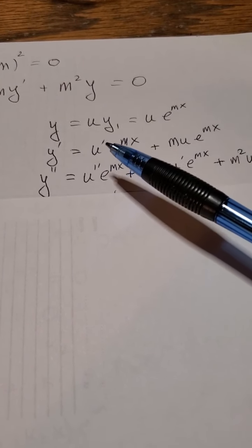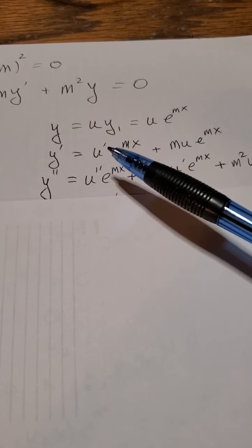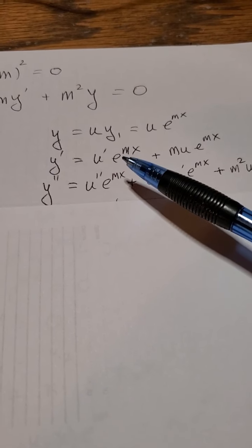Now y double prime: I take product rule here and I take product rule of this guy. Now when I take the product rule of this guy, I'm going to get u double prime e to the mx, then we're going to get u prime times m e to the mx.